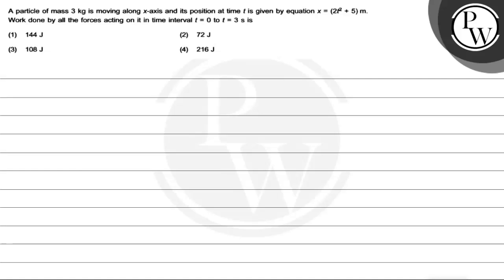Hello guys, let's see this question. The question says a particle of mass 3 kg is moving along x-axis and its position at time t is given by equation x = 2t² + 5 meter.